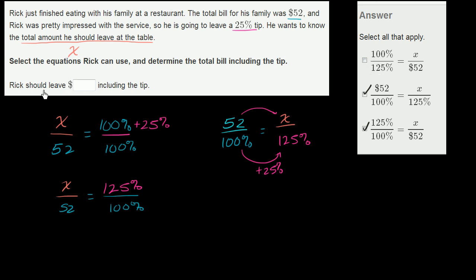But either way, our last thing to do is actually figure out how much Rick should leave. So we need to actually solve for x. And we could go back to this original equation here. And if we multiply both sides by 52, we get x is equal to 125% divided by 100%, which is 1.25 times 52.